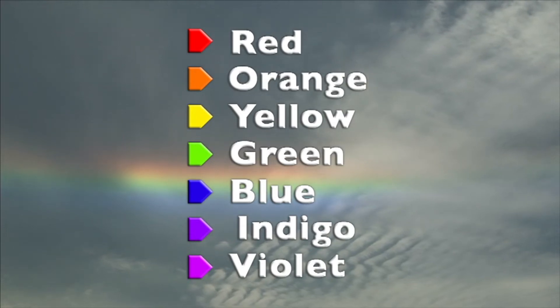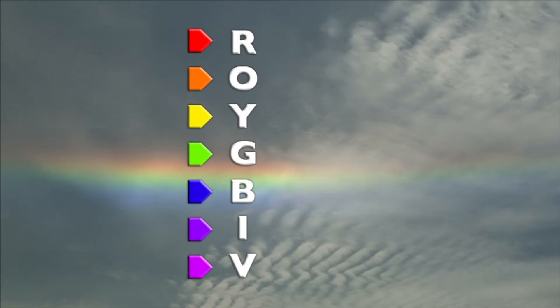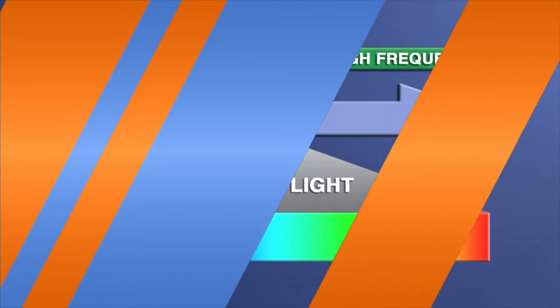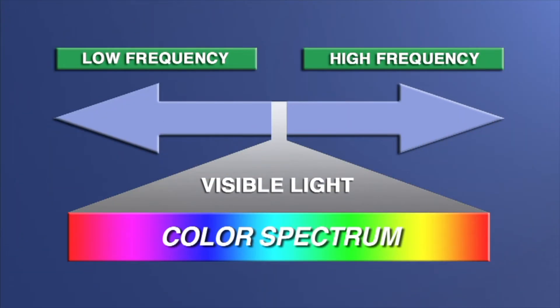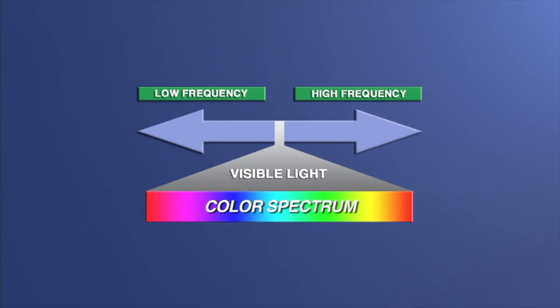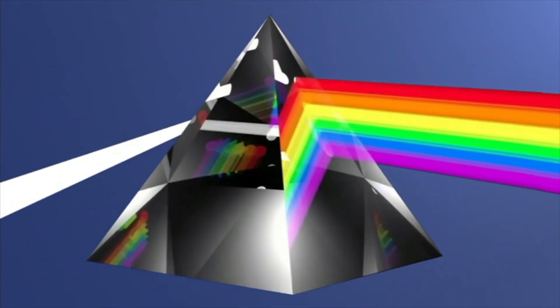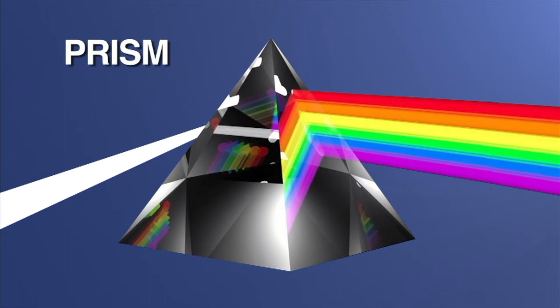Lots of people remember those colors using an acronym — an easy way of remembering the colors using the first letter of each color: ROYGBIV. All of those colors make up the color spectrum, and each color represents a small change in frequency within visible light. When you see what we call white light, what you are actually seeing is all of the colors of the rainbow mixed together. A prism is a uniquely shaped object that can separate white light into individual colors.